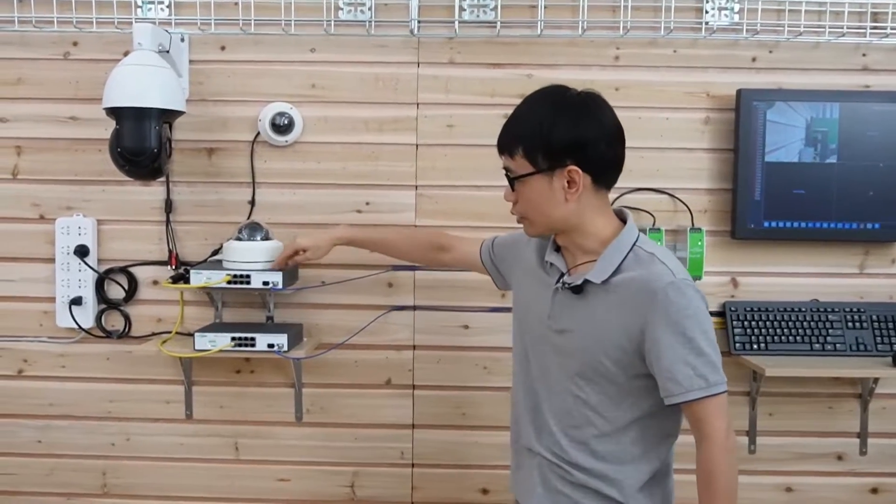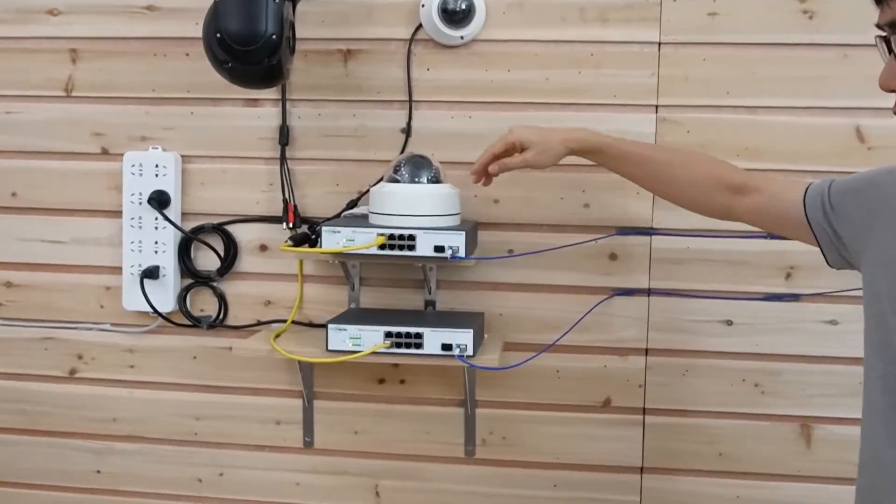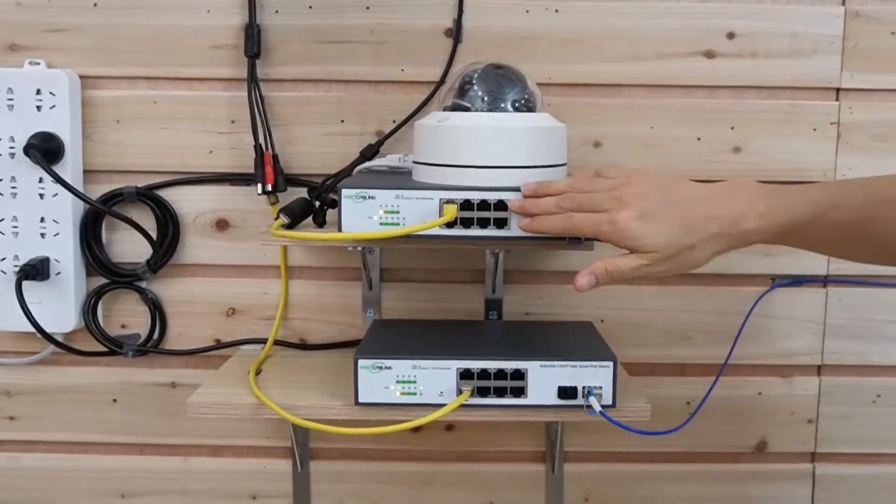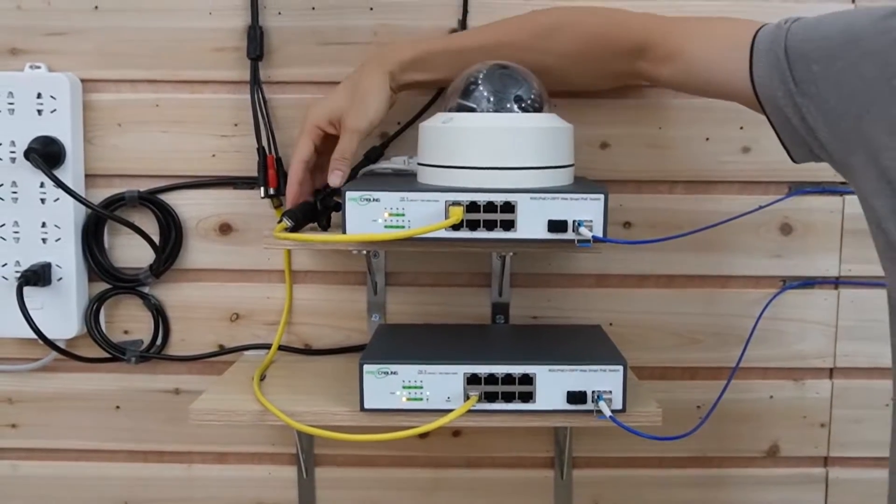From this switch, we use the Cat5e or Cat6 ethernet cable to connect to this IP camera. The PoE switch will supply power to the camera. There's no need for a power source.